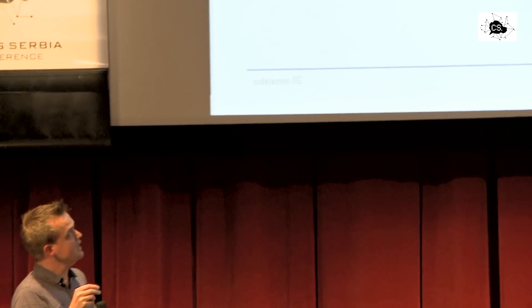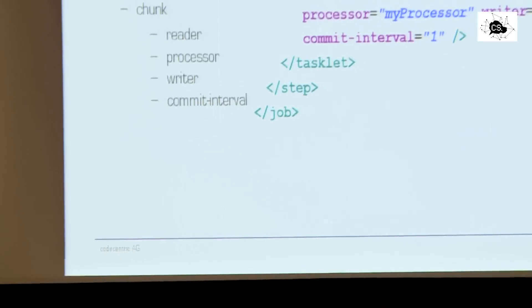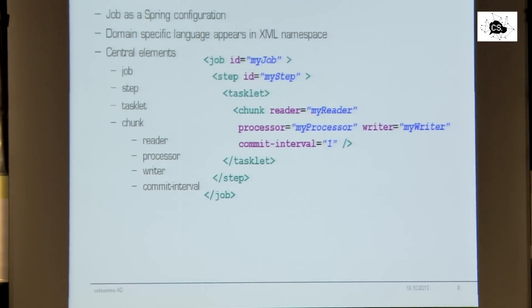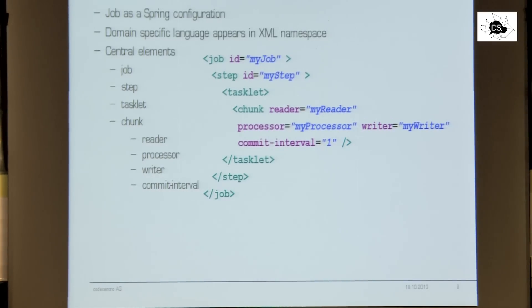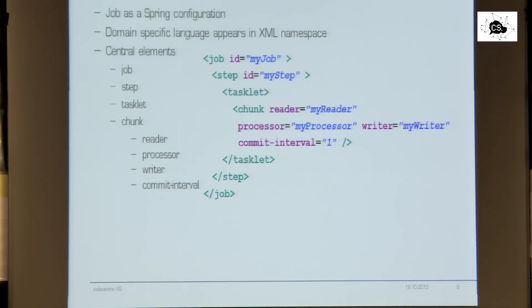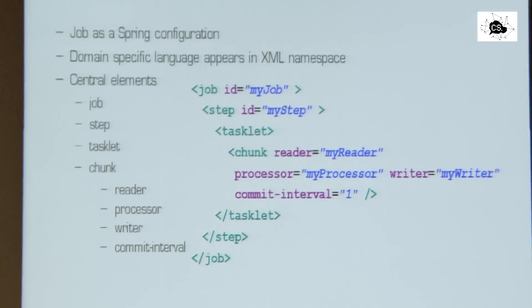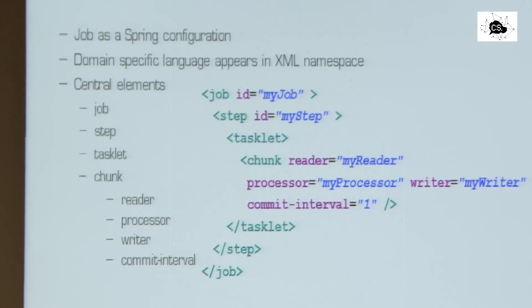Inside the step we have the tasklet, and then we have the chunk element — the important element for chunk processing. We define here the reader, which is a reference to a Spring bean with an ID. The same with the processor and the writer — these are references to the components. The important thing I mentioned before is that you can define a commit interval — that's the number of items in one chunk, in one transaction. In this case, we process only one item per transaction.